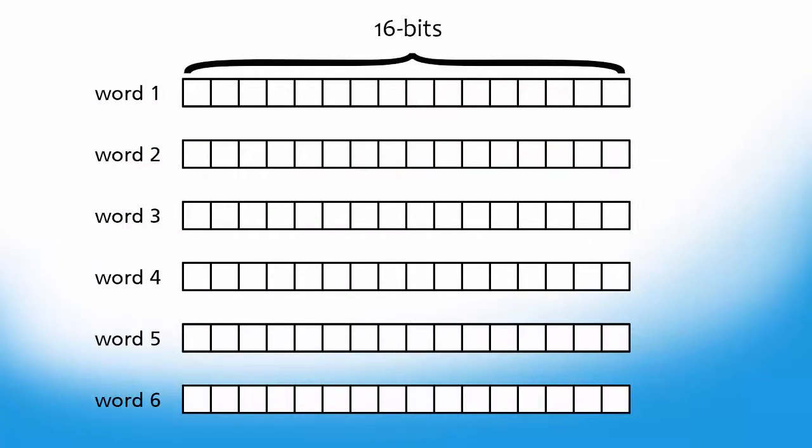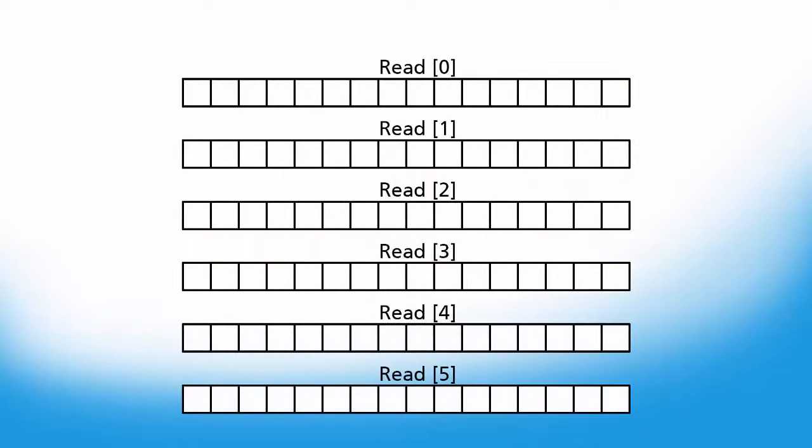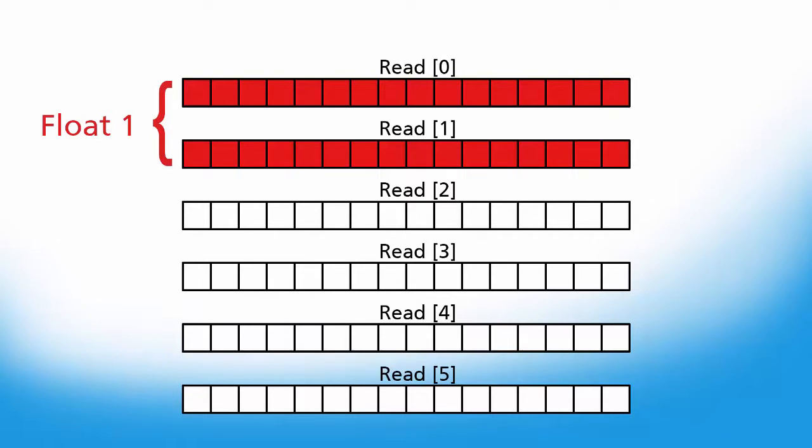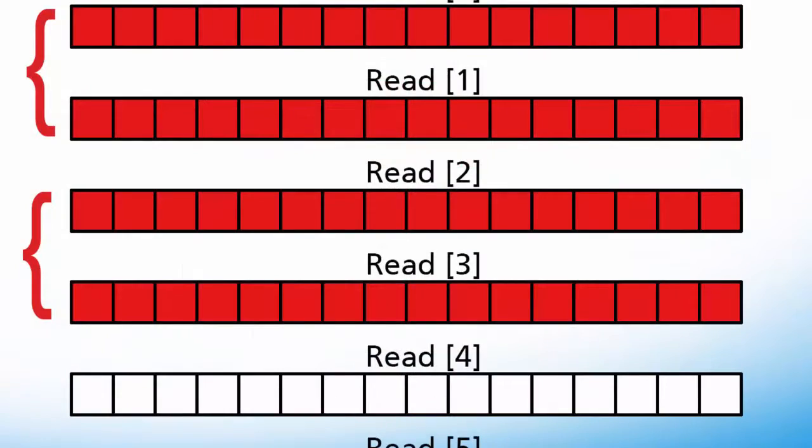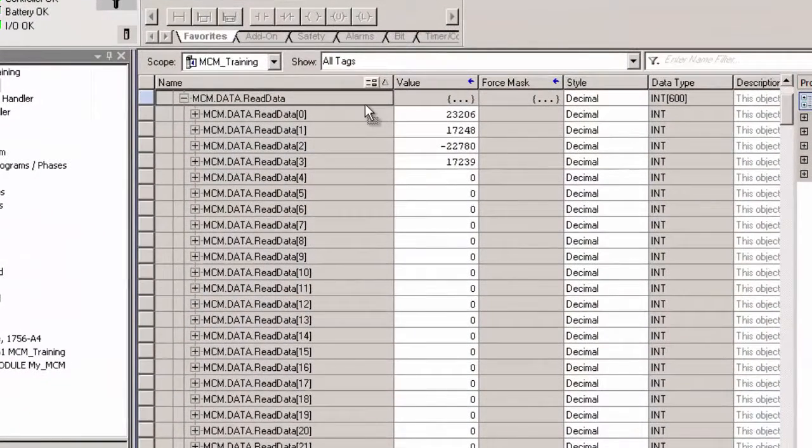Because our memory does not support 32-bit data types, the float values are broken up into two consecutive 16-bit integers each. Keep this in mind when you're mapping your data. The first float will occupy the first two addresses in my read data. The second float will be placed in the next two addresses. These four integers will be returned to the master and placed into the specified addresses in its database.